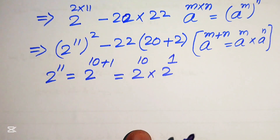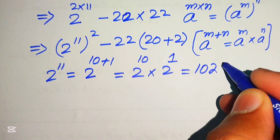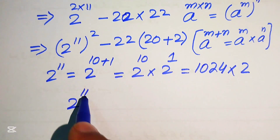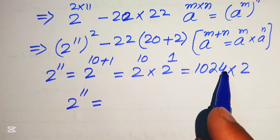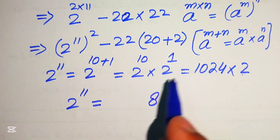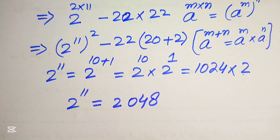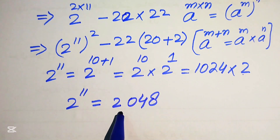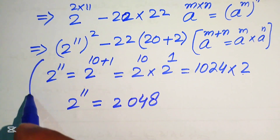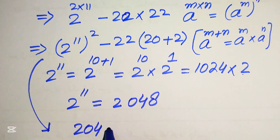We know that 2 to the power of 10 equals 1024 and 2 to the power of 1 equals 2. So 2 to the power of 11 equals 1024 multiplied by 2. Multiplying: 2 times 4 is 8, 2 times 2 is 4, 2 times 0 is 0, and 2 times 1 is 2 — giving us 2048. So 2 to the power of 11 equals 2048, and we replace this value in our expression.